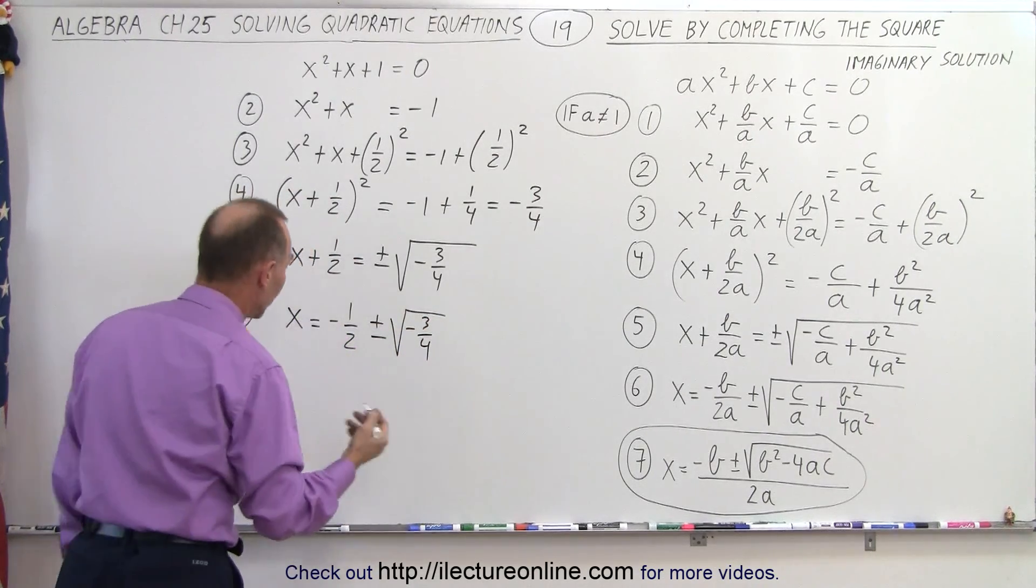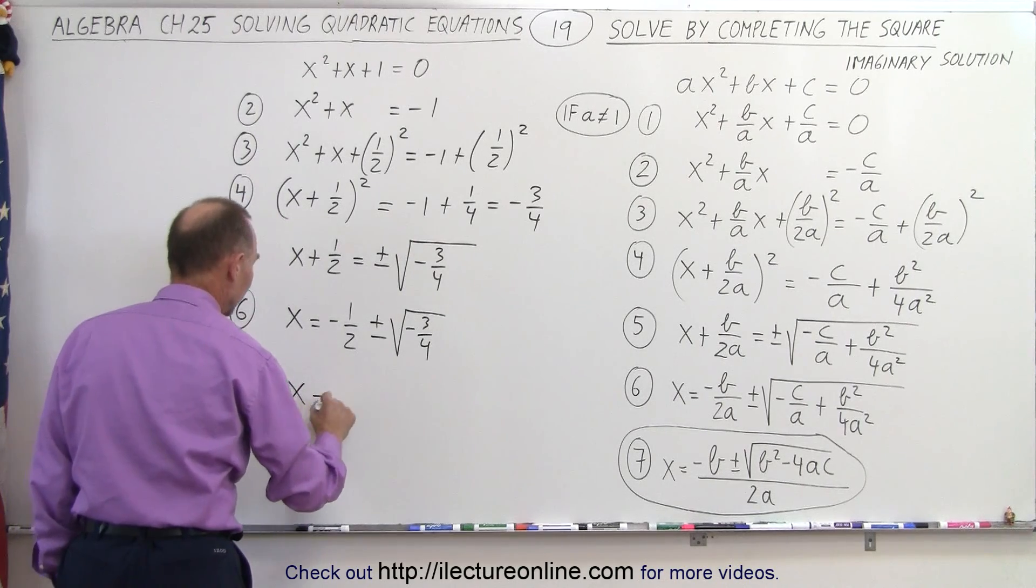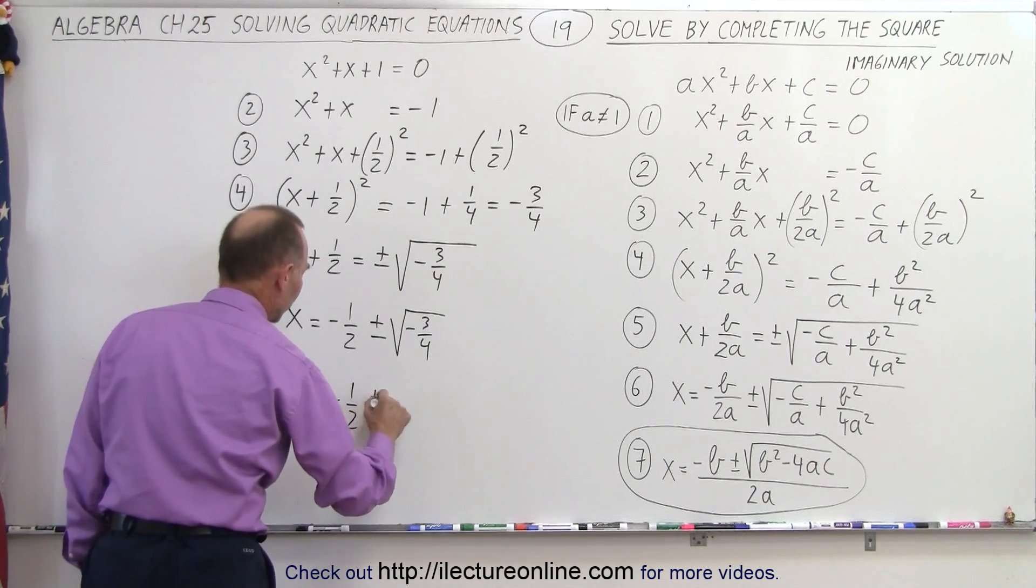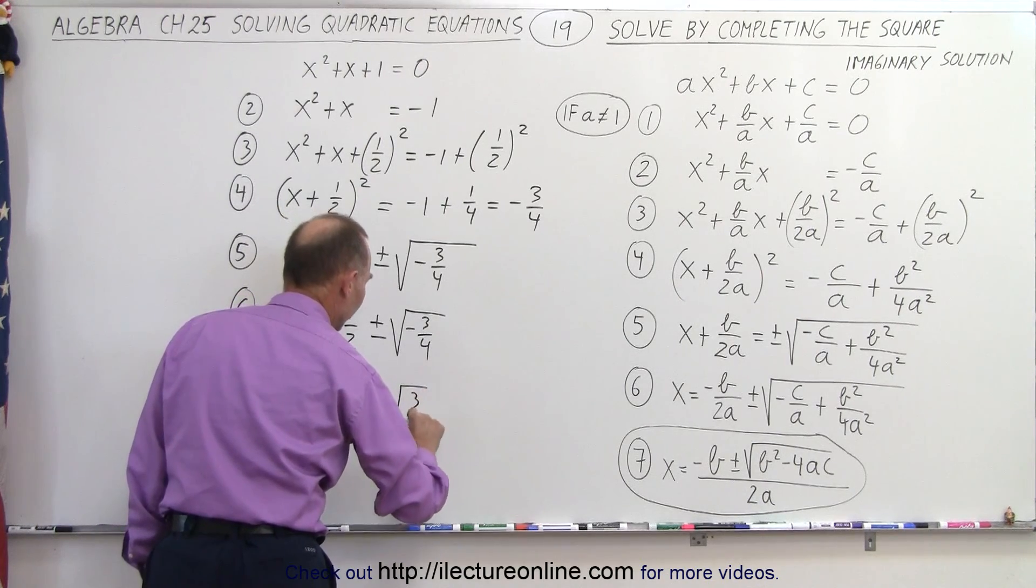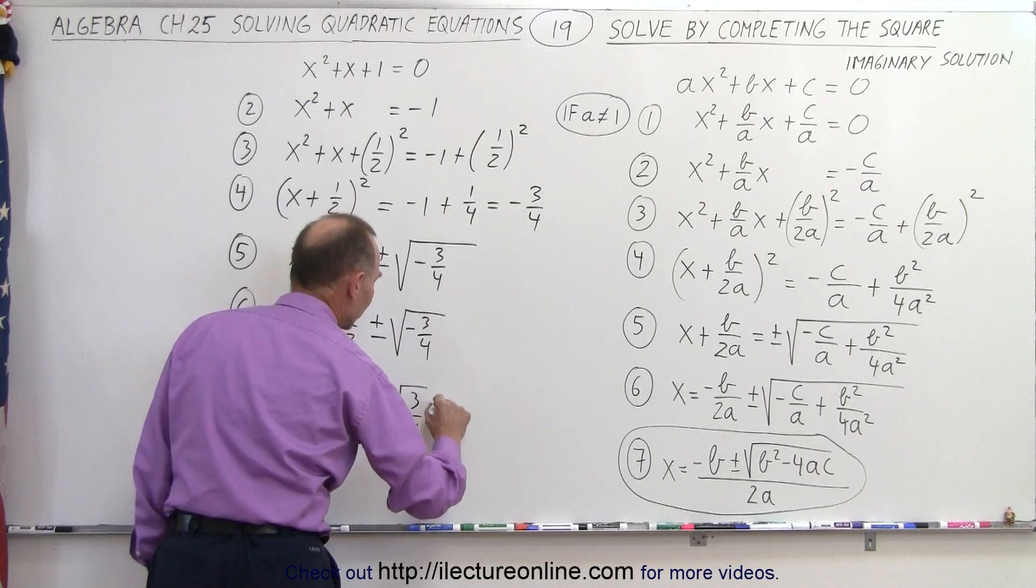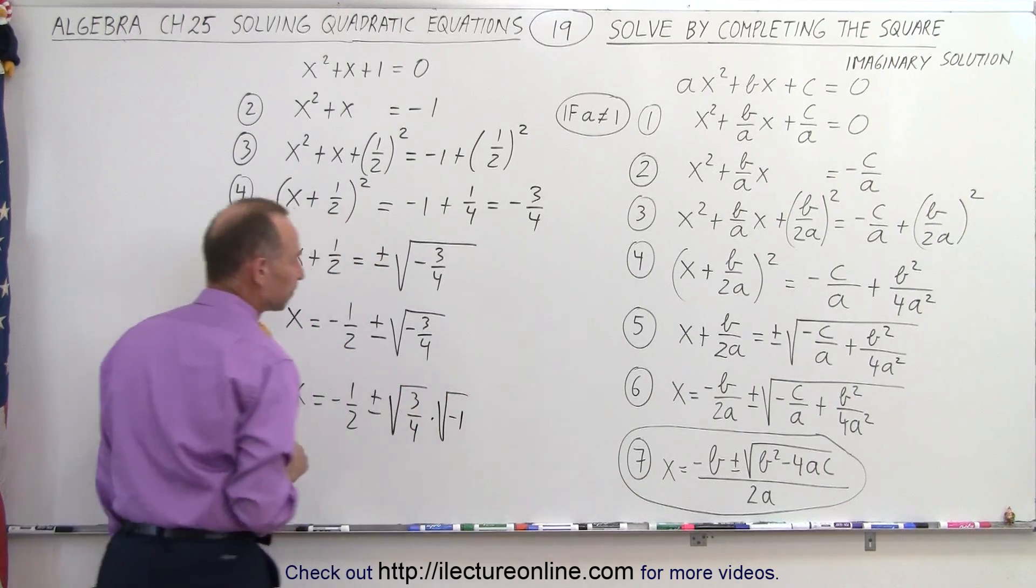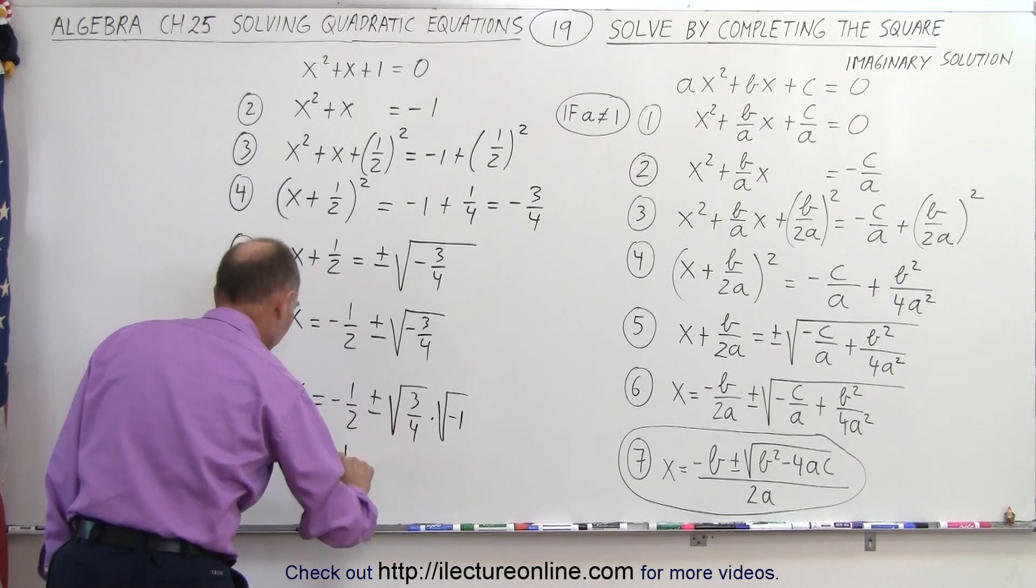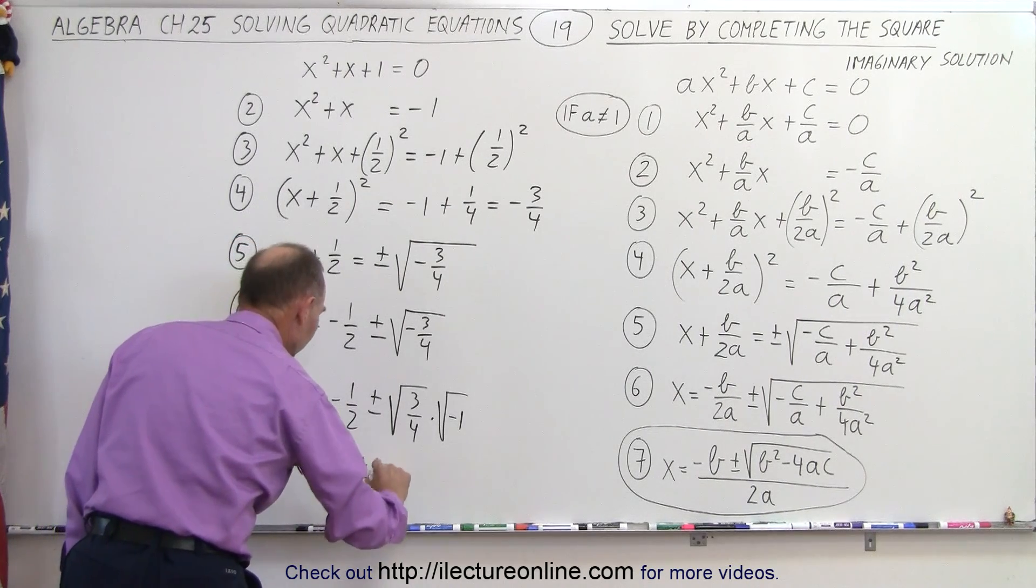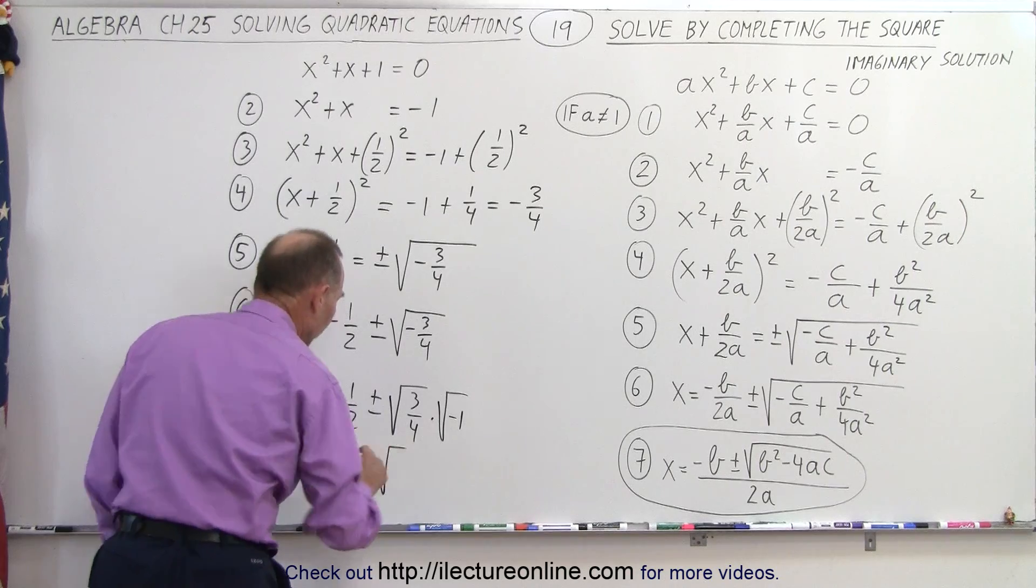How do we write that? Well, it can be written as follows. That means x is equal to minus 1 half plus or minus the square root of 3 over 4 times the square root of negative 1. And of course, the square root of negative 1 is equal to i. So this can be written as x is equal to minus 1 half plus or minus the square root of 3 over 4 i.